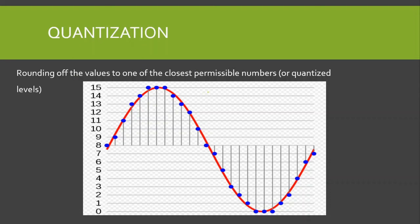Quantization is rounding off values to the closest permissible numbers, called quantized levels. Let mp be the maximum positive amplitude and minus mp be the maximum negative amplitude — this is the range of the message signal. I have divided this range from minus mp to positive mp into quantized levels. As you can see, we have 16 quantized levels, denoted by L, and these quantized levels are of equal step size — the step size between 0 and 1, and 1 and 2, are equal.